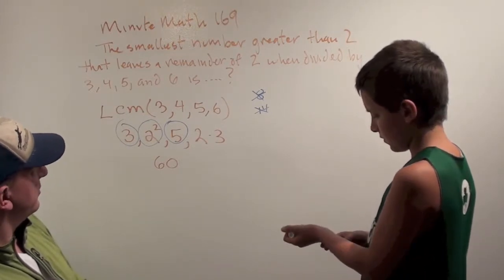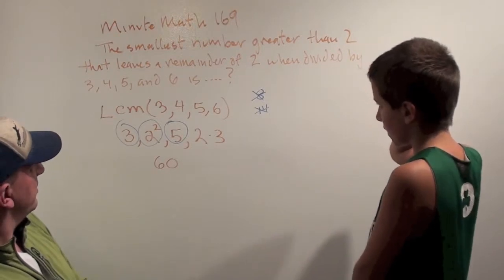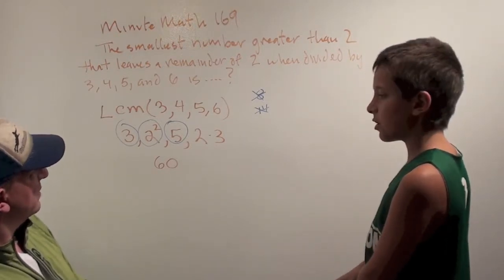So what is the smallest number, greater than 2, that leaves a remainder of 2 when divided by 3, 4, 5, and 6? 62. 62.